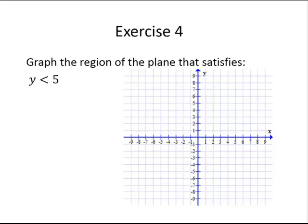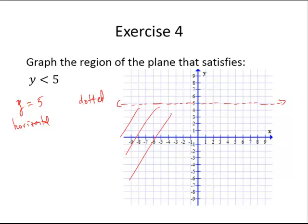Here we are asked to graph y is less than 5. If we first think about where y equals 5, recall that y equals 5 is a horizontal line. We use a dotted line, so we graph y equals 5 with a dotted line. Where are the y values less than 5? Below the line — so y is less than 5 below the line, and that is where we shade.